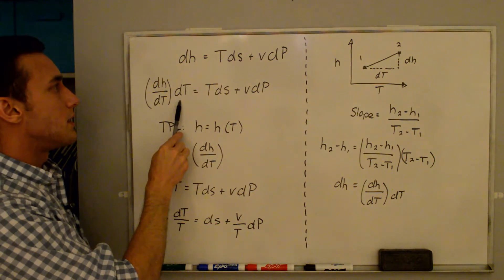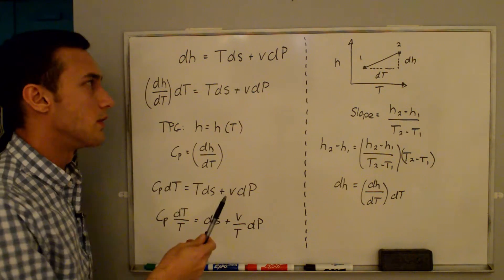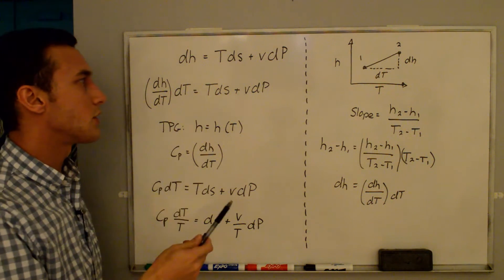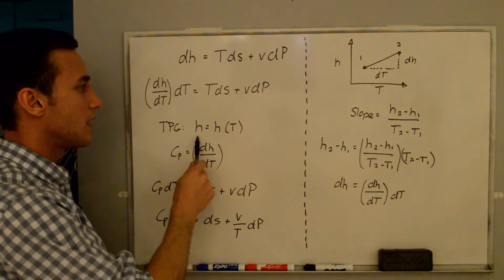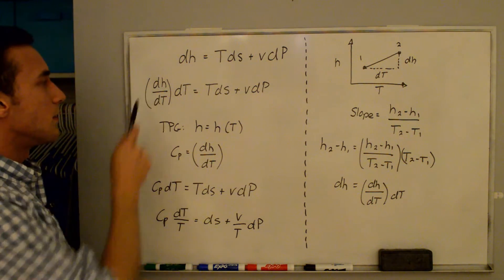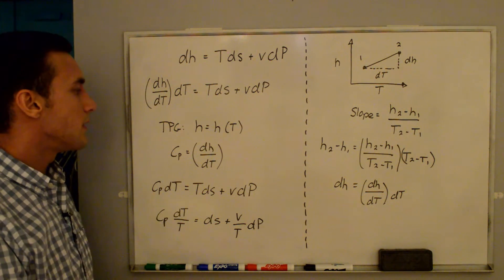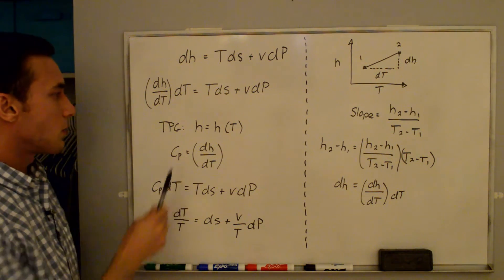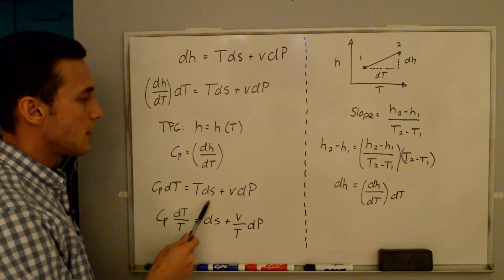This dh/dt times dt is essentially the first term in a partial derivative if enthalpy were a function of both temperature and pressure, except that for a thermally perfect gas enthalpy is only a function of temperature, which is why we use d instead of the partial derivative symbol. From the specific heat video, cp equals dh/dt, so we can plug in and get cp·dT equals T·ds plus v·dp.